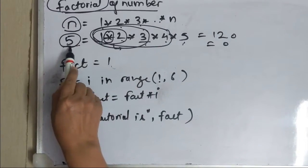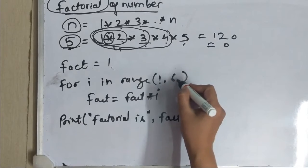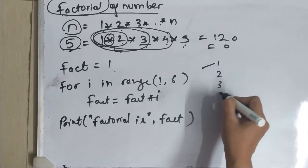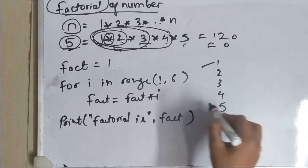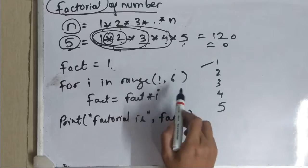I want to find factorial 5. If I would have written 5 over here this loop will go from 1 to 3, 4 only. I want it to go from 1 till 5 so I have written 1 more than 5 that is 6.